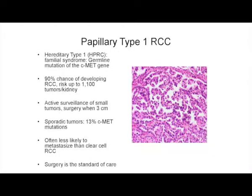There has been much hope from results from the Cancer Genome Project, but what we know today about these diseases comes primarily from work from the different hereditary family lines and hereditary cancers. Papillary type 1 kidney cancer — we know a lot about hereditary type 1 papillary cancer as a familial syndrome. It's a germline mutation of the C-MET gene, and patients have a 90% chance of having thousands of tumors that are bilateral. The treatment of choice is active surveillance of the small tumors, with surgery when tumors reach three centimeters.